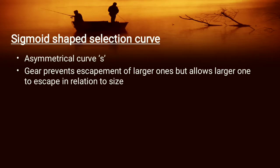This is an S-shaped curve. The gear prevents the escapement of larger ones and allows smaller ones to escape in relation to size. Fixed gear prevents large fish entry but allows the smaller fish to escape. This is the case of fixed gear.